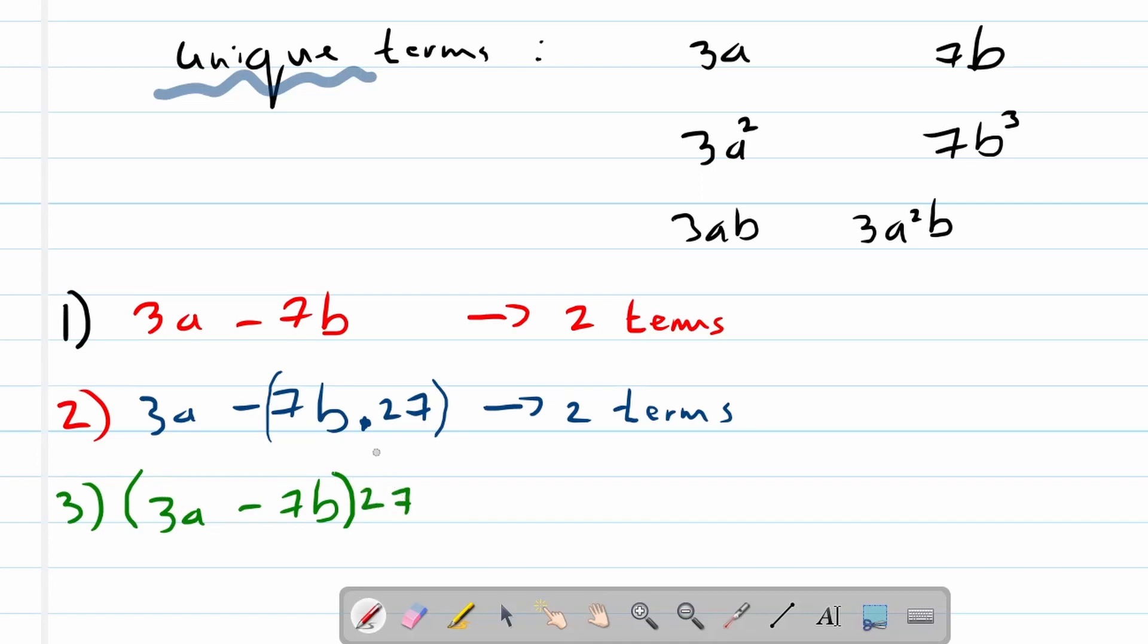Now you can see this bracket means multiplication with 27. So in this example, there's only one term.